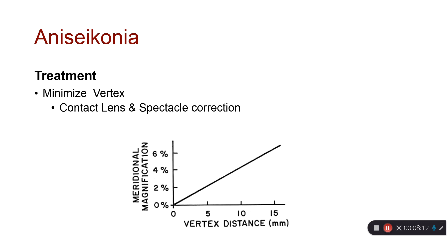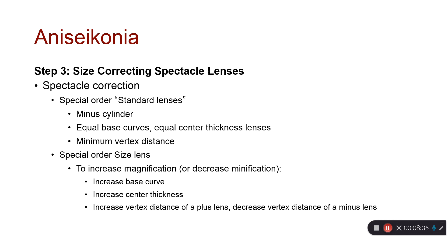To recap: vertex distance changes magnification. A vertex distance of zero — contact lenses on the eye — has effectively zero magnification effect, whereas spectacles at a 15mm vertex distance can produce a 4–6% increase in image size. The next step is size-correcting spectacle lenses, where we can order standard lenses leaving one eye slightly blurry — usually the non-dominant eye — or order specially sized lenses that change magnification by altering the base curve, center thickness, or vertex distance.